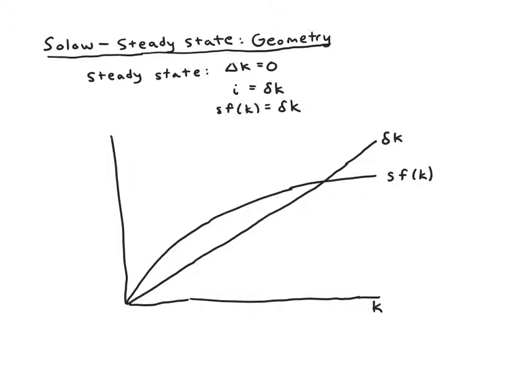Now we see where the two intersect. This is where Δk would be 0, where s·f(k) equals δk, and that means that's where our k* is. Our steady state level of capital per worker.